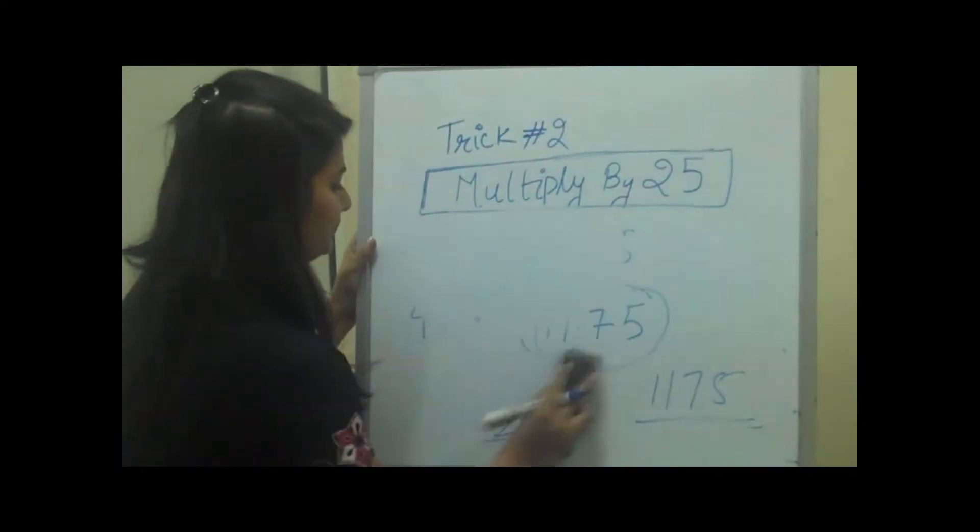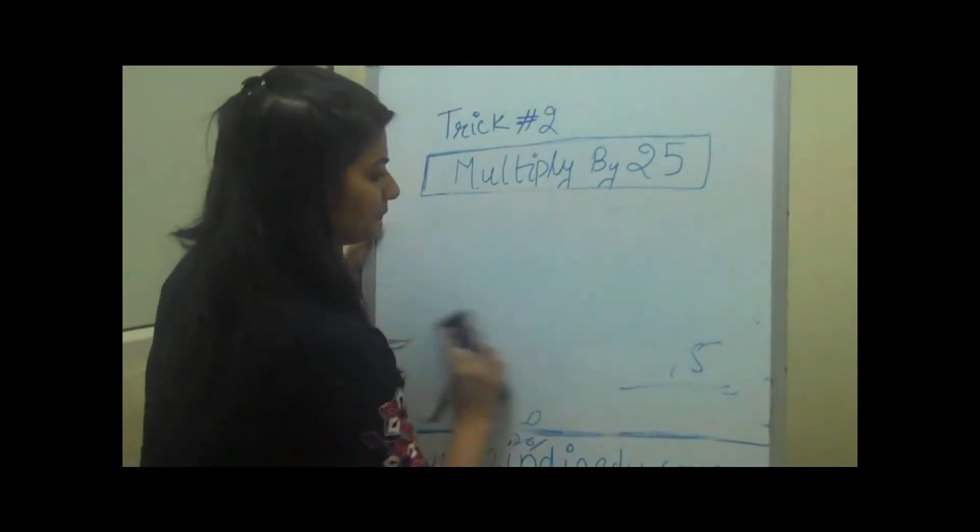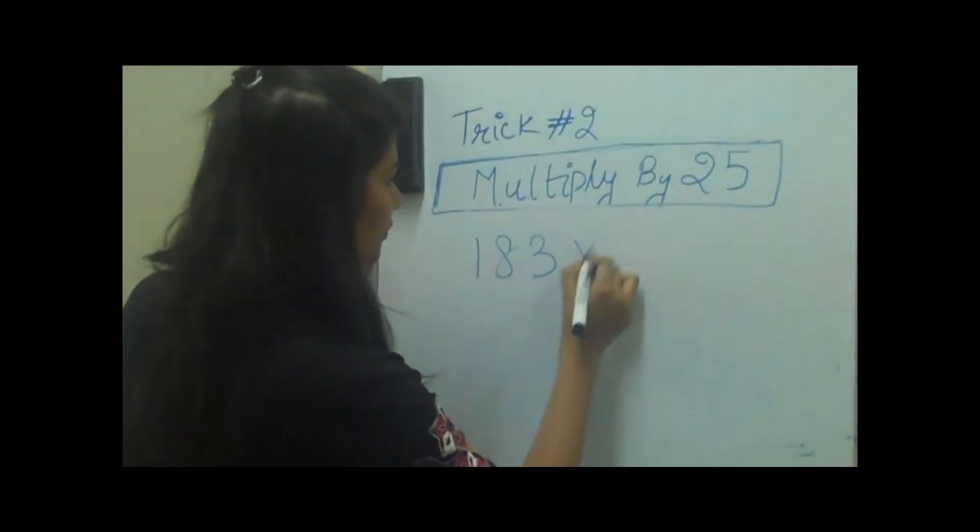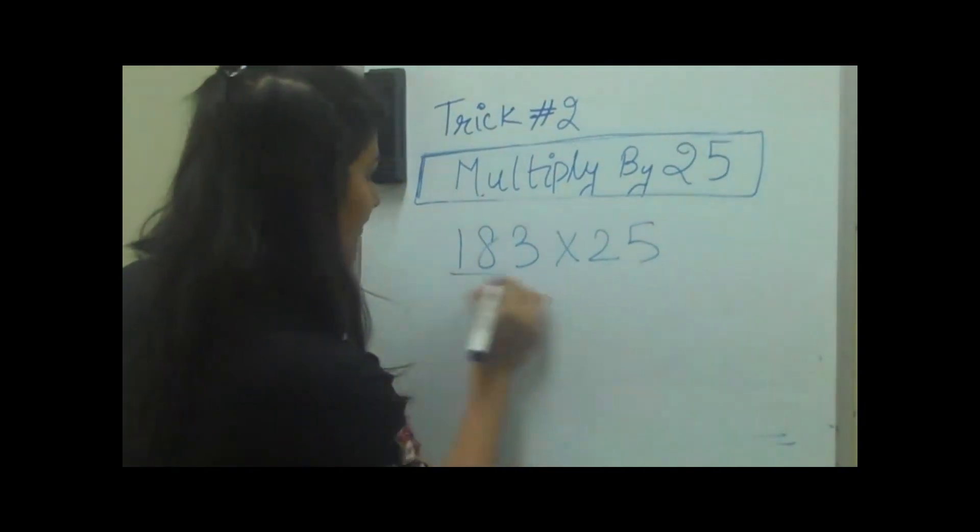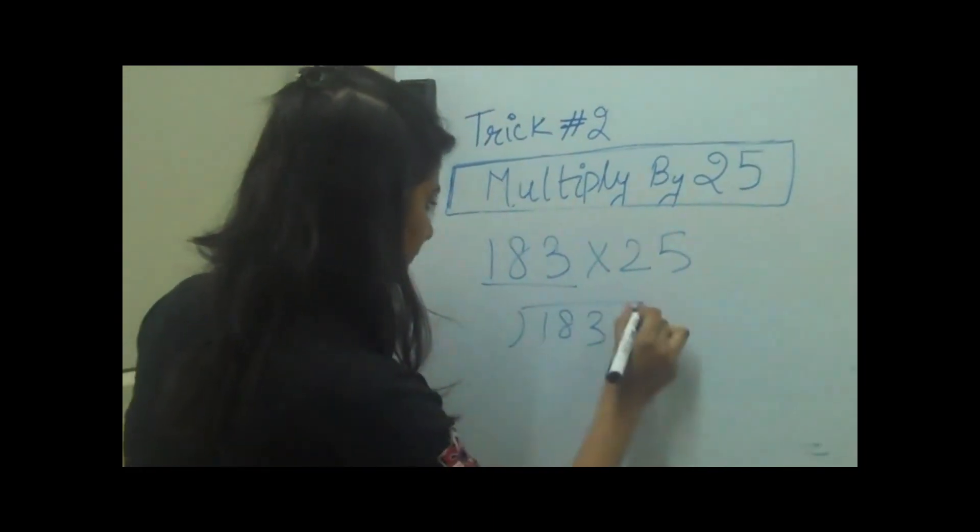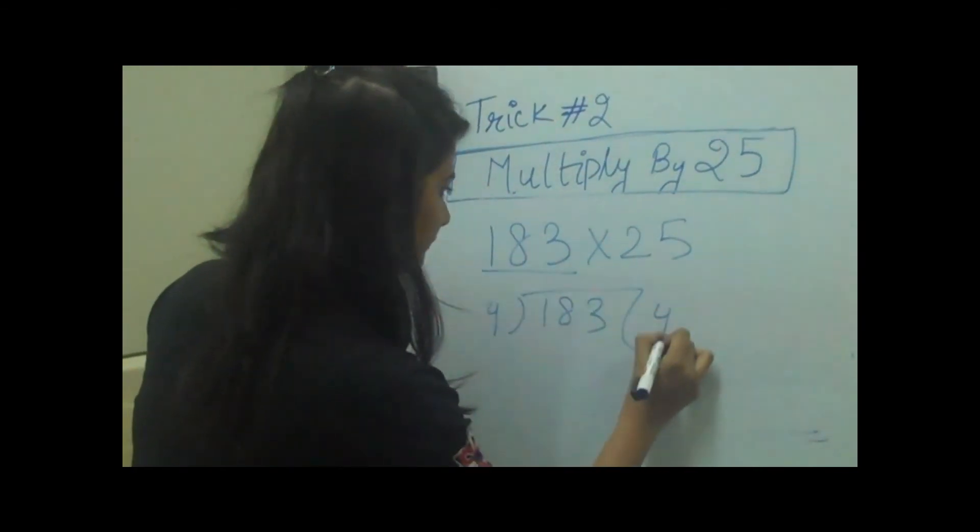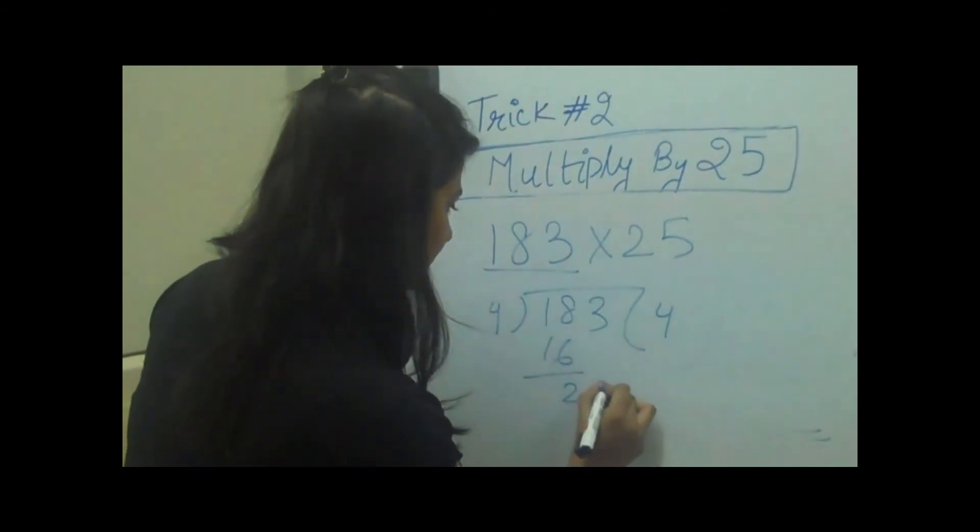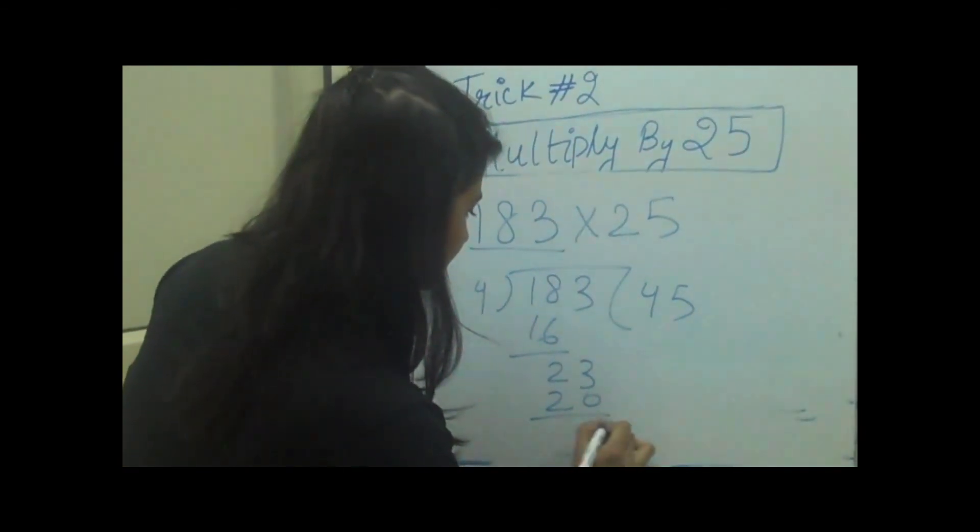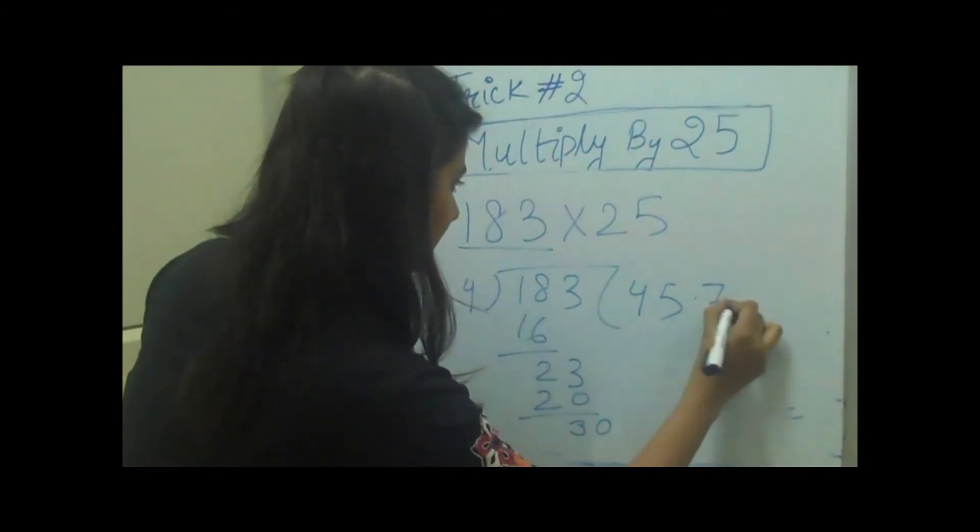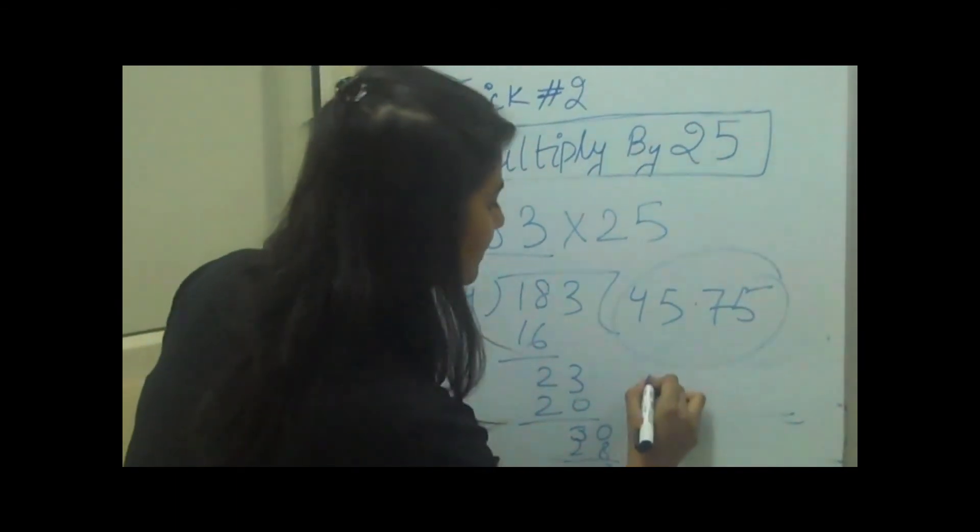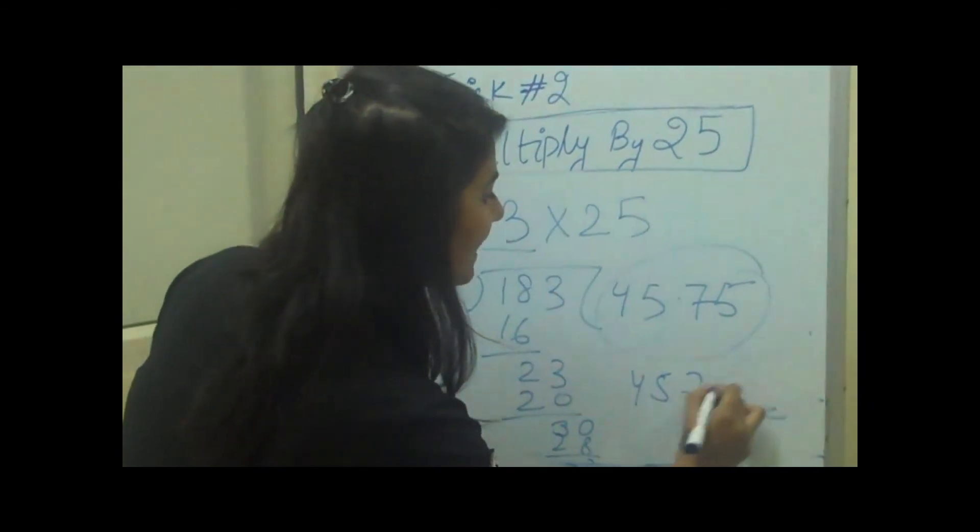Let's take another example. 183 into 25. We will divide this number by 4 and then we will multiply it by 100, which makes 4575.